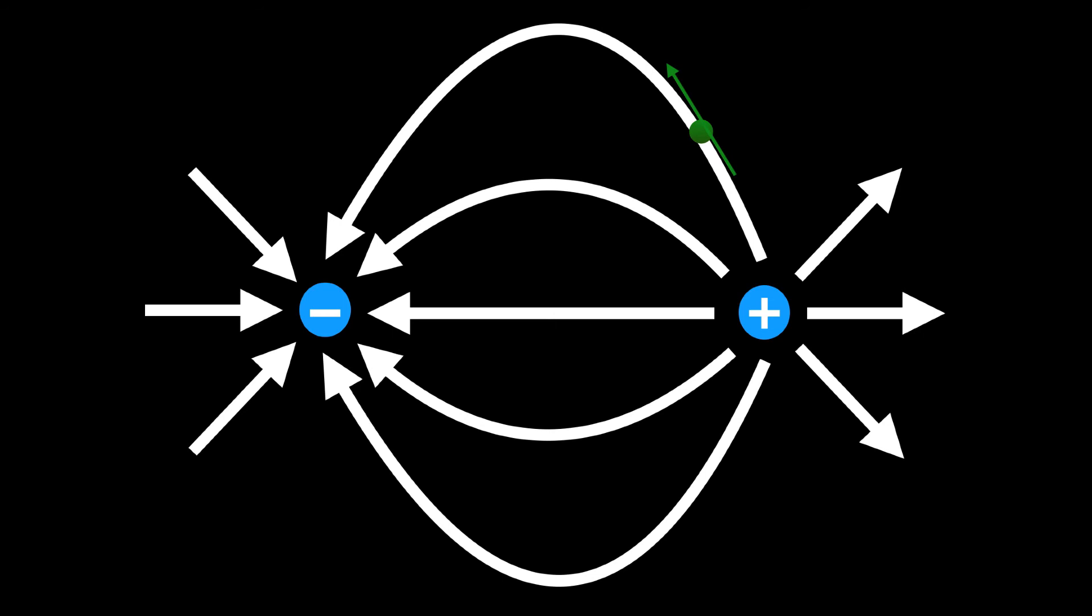So the charges are of equal magnitude, but imagine if our positive point charge was of a greater magnitude. What we need to do to follow the third rule is to draw more lines coming out of the positive point charge.